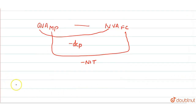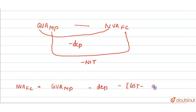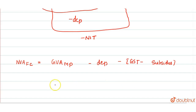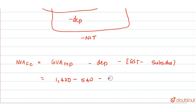So we make a formula: Net Value Added at Factor Cost equals Gross Value Added at Market Price minus depreciation, minus net indirect tax — which is GST minus subsidies. We put the values in: gross value added is 1,470 crores, minus 540, minus depreciation which is 50 crores, minus GST which is 10.